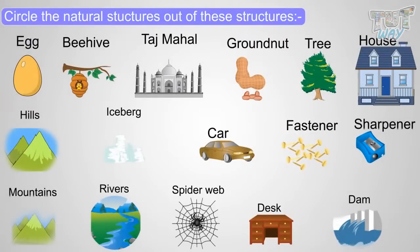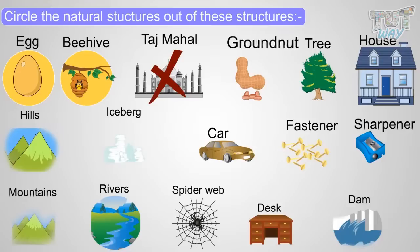Here we have many structures. Let's circle the natural structures out of these structures. Egg, natural. Beehive, natural. Taj Mahal, no, it's not a natural structure. It's a man-made structure. Groundnut, natural. Tree, natural.